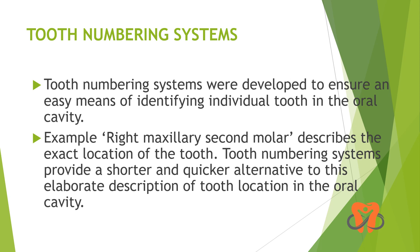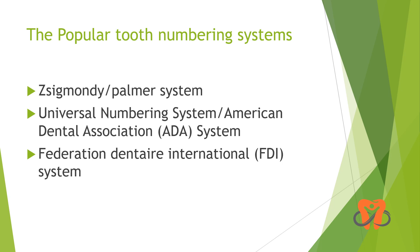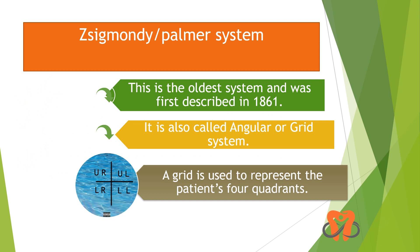Now coming to tooth numbering systems. These systems were developed to ensure easy means of identifying individual teeth in the oral cavity. For example, 'right maxillary second molar' describes the exact location of the tooth, but a tooth numbering system provides a shorter and quicker alternative to this elaborate description. That's why these systems were developed. There are three popular tooth numbering systems: the Zsygmondy-Palmer system, the Universal Numbering System, and the Federation Dental International FDI system.